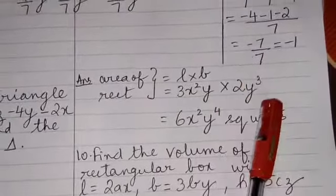Length is given to be 3x²y and the breadth is given to be 2y³. Now we know that these two terms are not like terms, but we also know that multiplication can be performed even with unlike terms.